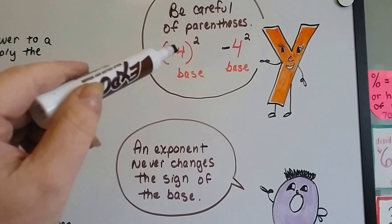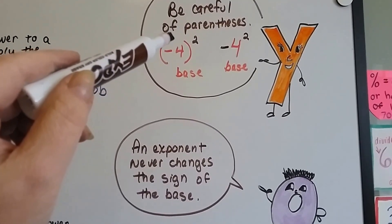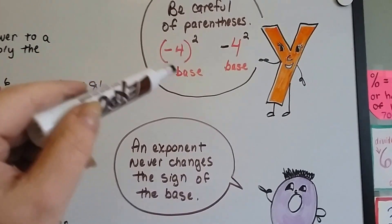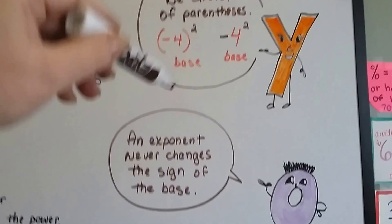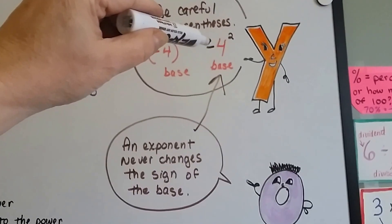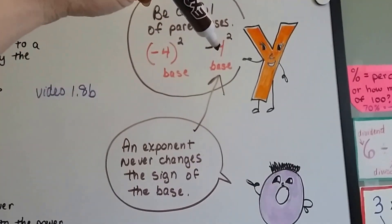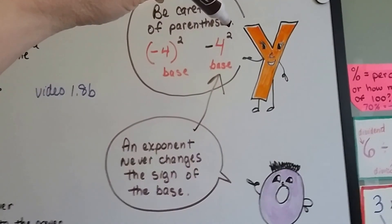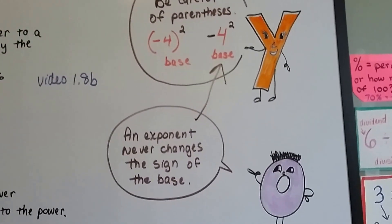So this entire thing is the base. We'd have negative 4 times negative 4 if it was to the second power. In that case, it would be a positive 16. But this is the entire thing. What this means is it's talking about this. If there's a negative and there's no parentheses and then the 4 is the base, then it's going to stay a negative.